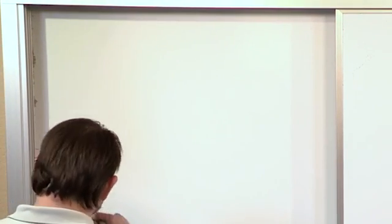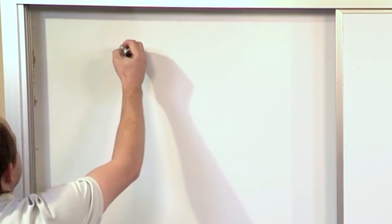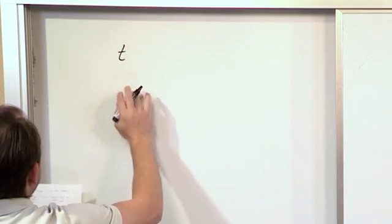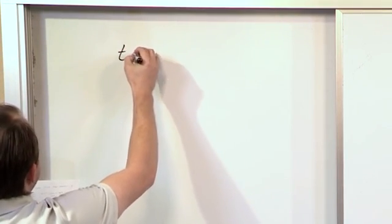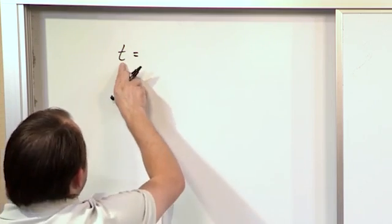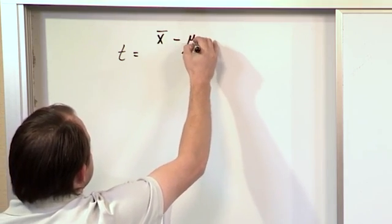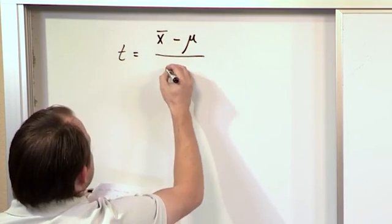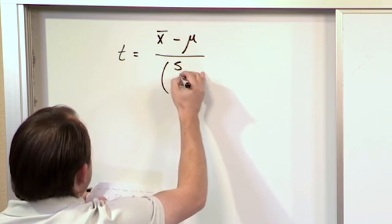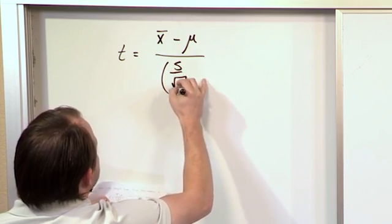So let me write this down. This is valid for small samples when we're using the T distribution. The test statistic that you use for the T distribution for hypothesis testing is the following: T equals X bar (I'll explain that in a minute) minus mu, divided by S over square root of N.